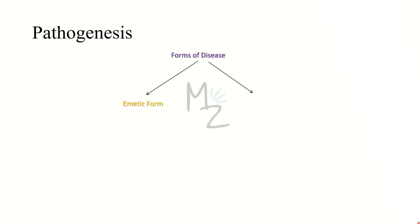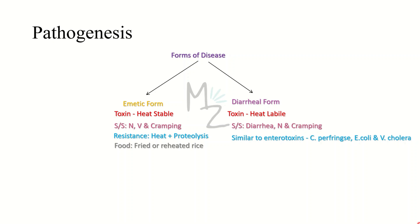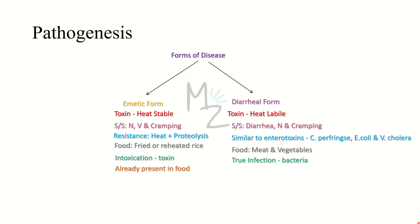There are two forms of disease. The emetic form has a heat-stable toxin and presents with nausea, vomiting, and cramping — specifically vomiting, since 'emetic' derives from 'emesis.' The diarrheal form has a heat-labile toxin and presents with nausea, cramping, and diarrhea. The diarrheal form is similar to enterotoxins of Clostridium perfringens, E. coli, and Vibrio cholerae. The emetic form is caused by eating fried or reheated rice and is an intoxication — the toxin is already present in the food. The diarrheal form is a true infection caused by meat and vegetables, as the toxin is produced by bacteria after ingestion.